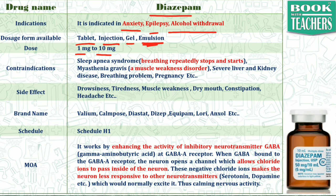Diazepam is contraindicated in cases of sleep apnea syndrome — a breathing disorder while sleeping where breathing repeatedly stops and restarts. It is also contraindicated in myasthenia gravis, where the muscles become too much weakened, for example the drooping of the eyelid, which is totally involuntary to the patient. It is also contraindicated in severe liver and kidney diseases, breathing problems, and pregnancy.